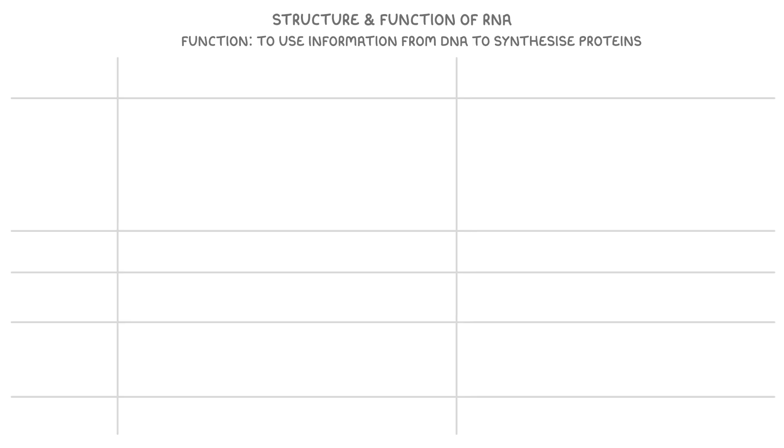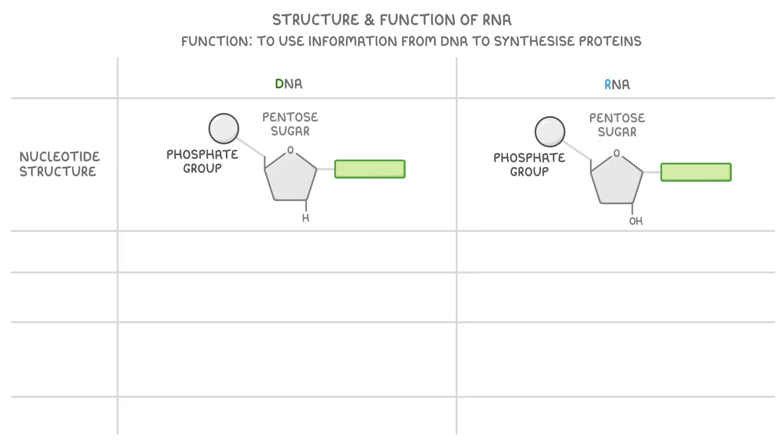Its structure is fairly similar to DNA, so let's compare DNA to RNA and have a look at their key features. First, for their nucleotide structure, they both contain a pentose sugar attached to a phosphate group, and one of the four nitrogenous bases.